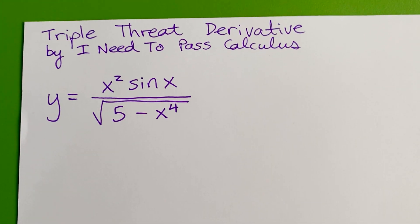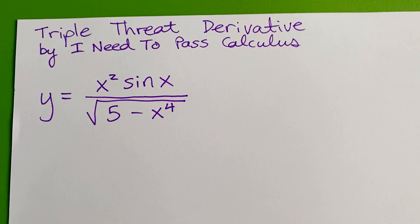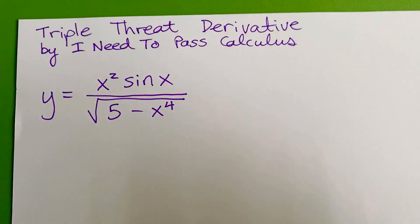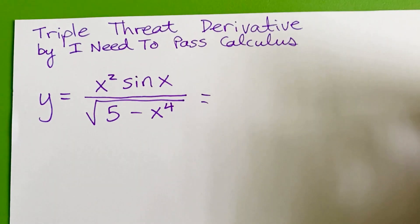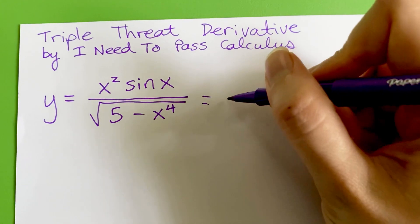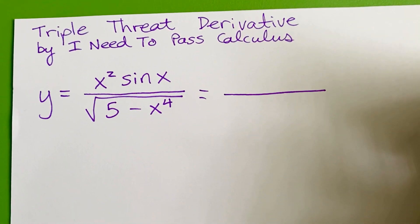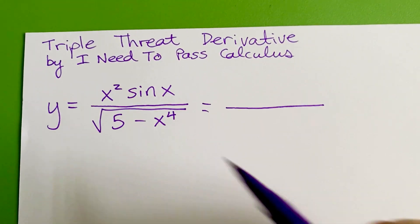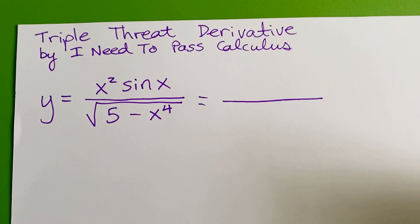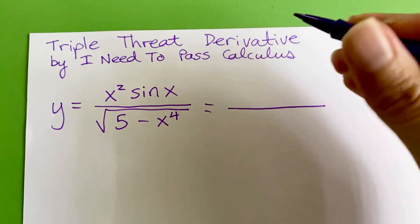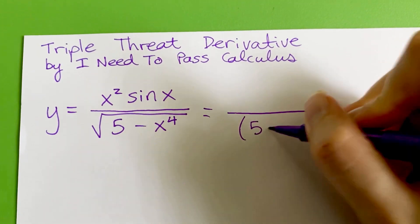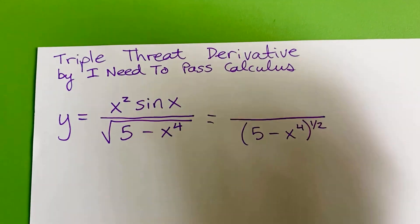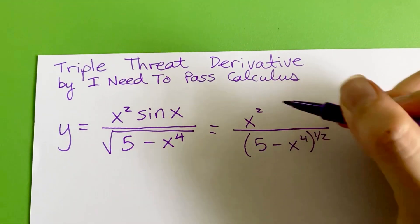So let's say you have this function and you need to take its derivative. I like to start derivatives by doing any rewriting I need to do for the function to make my life a little easier. So if I have a radical, I prefer to write that as an exponent so it looks more like the power rule. So the bottom I would rewrite as five minus x to the fourth to the one half power and the top I can leave the same.